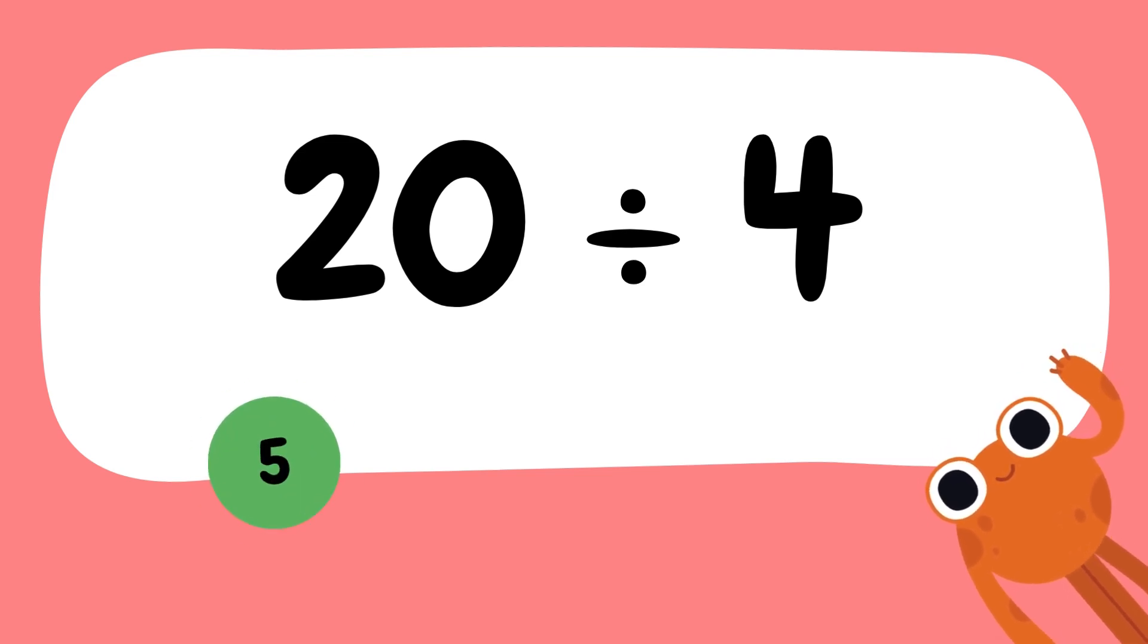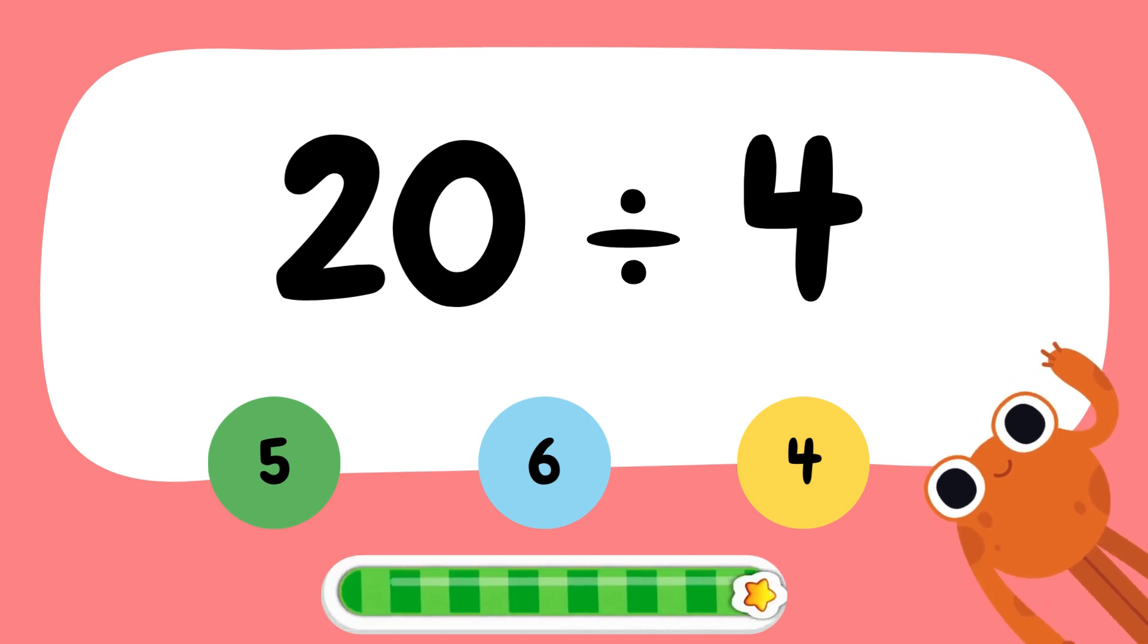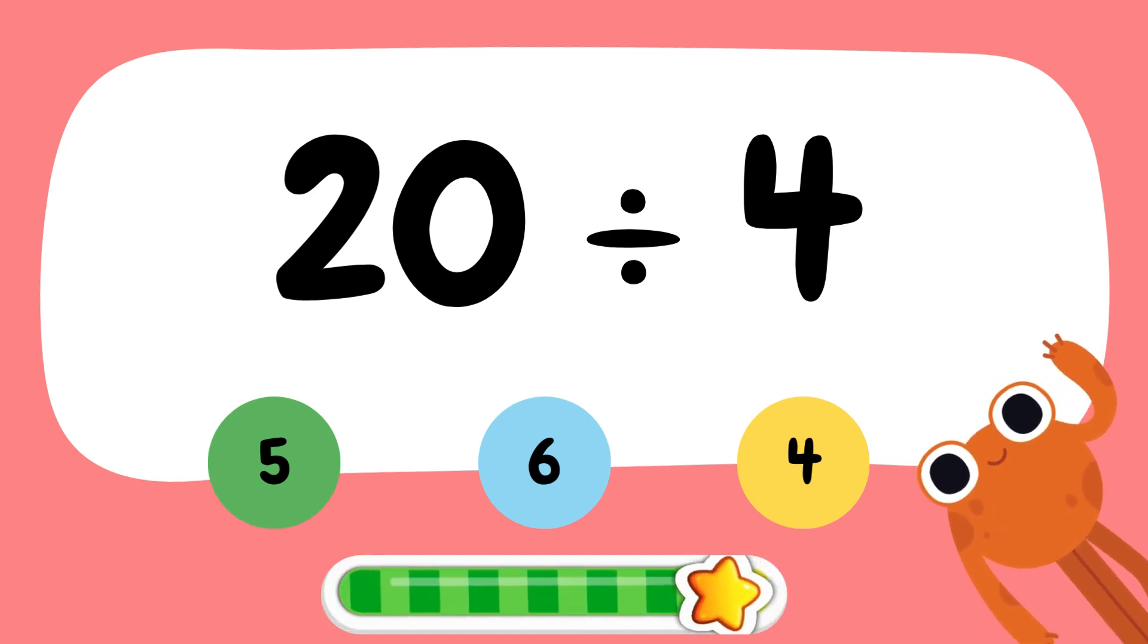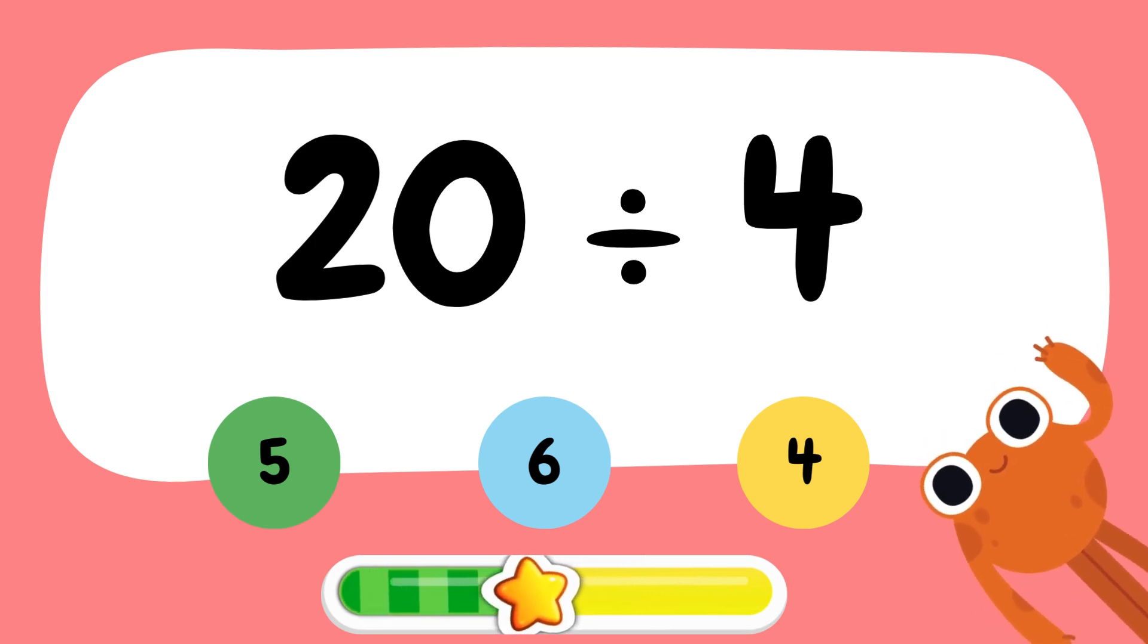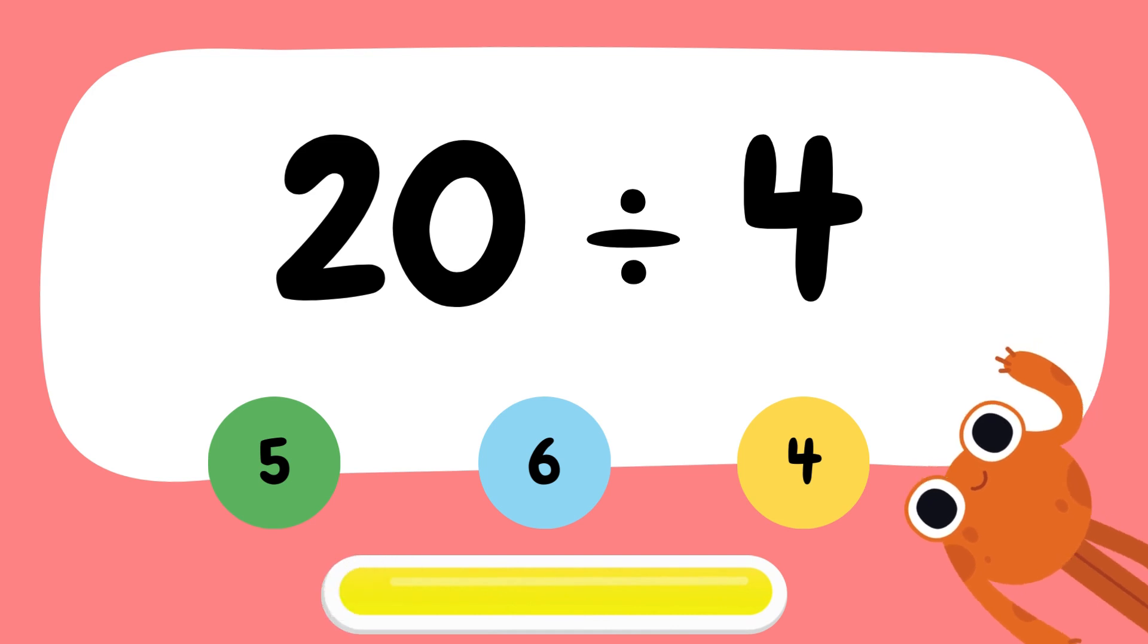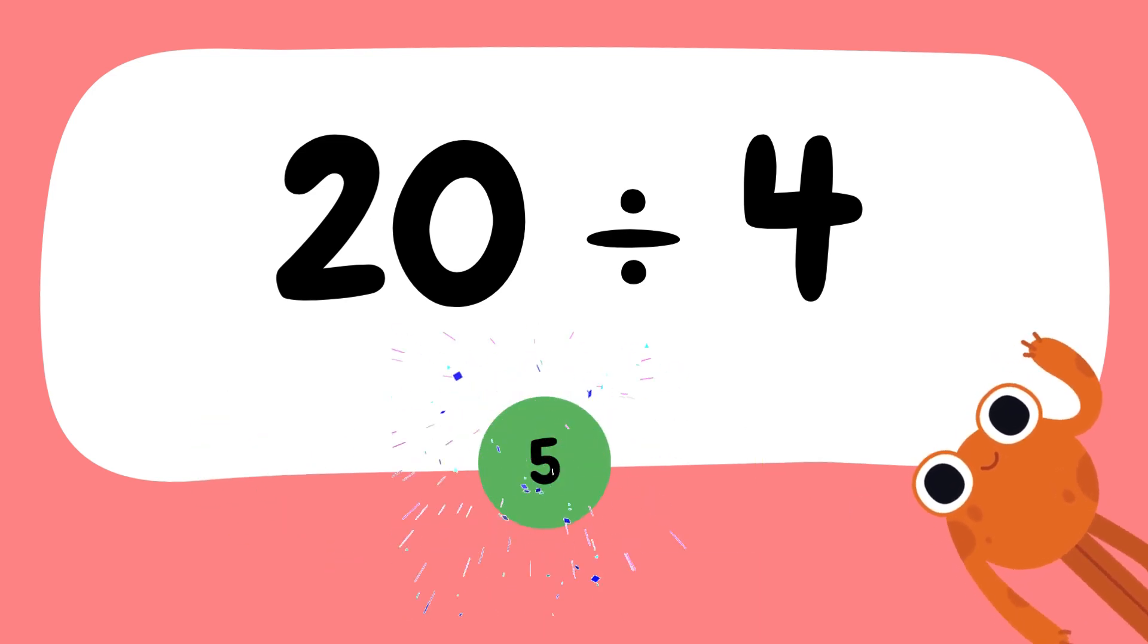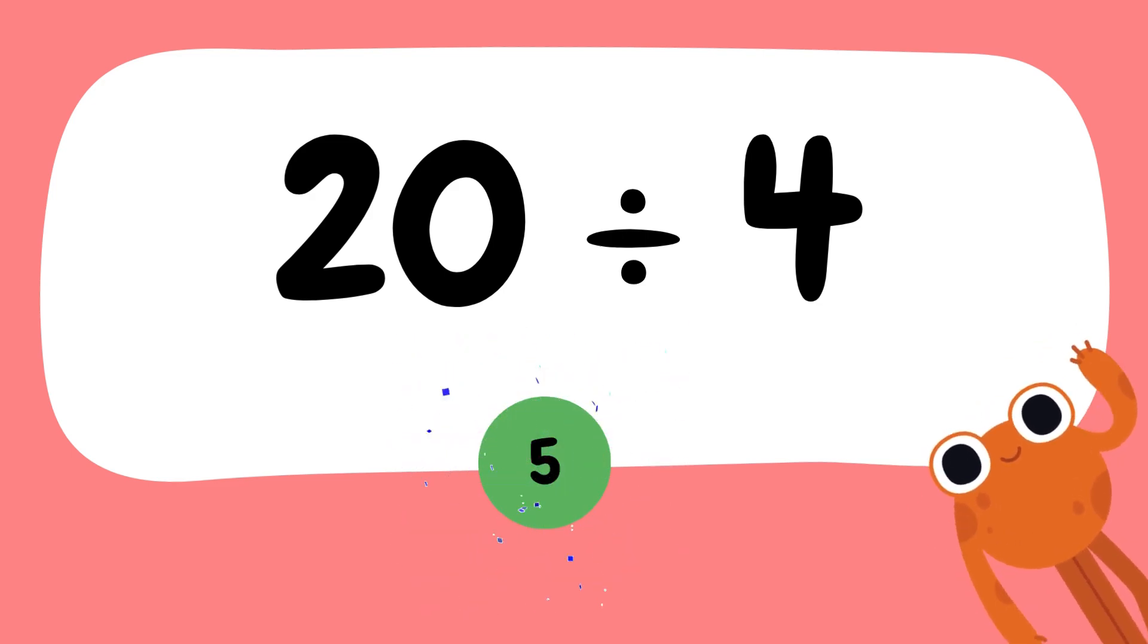Next, what is 20 divided by 4? The right answer is 5. Well done if you got it right.